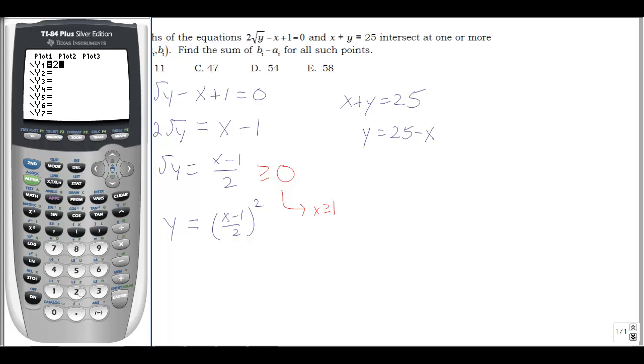So what I can do, let's do the 25 minus x. And then I have (x-1) divided by 2, whole thing squared. Go to graph, and I'm looking for my intersections. There's my parabola. I don't see this as a line. I don't see that because I need to zoom out further. I'm going to go to window. Let's change these.